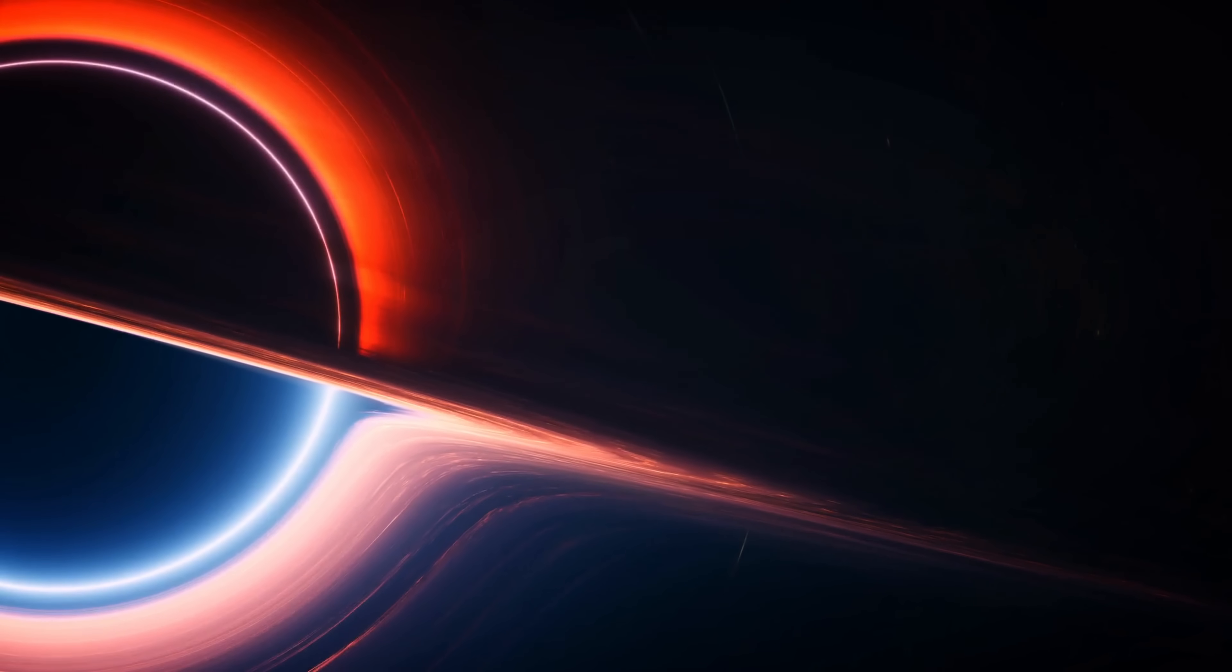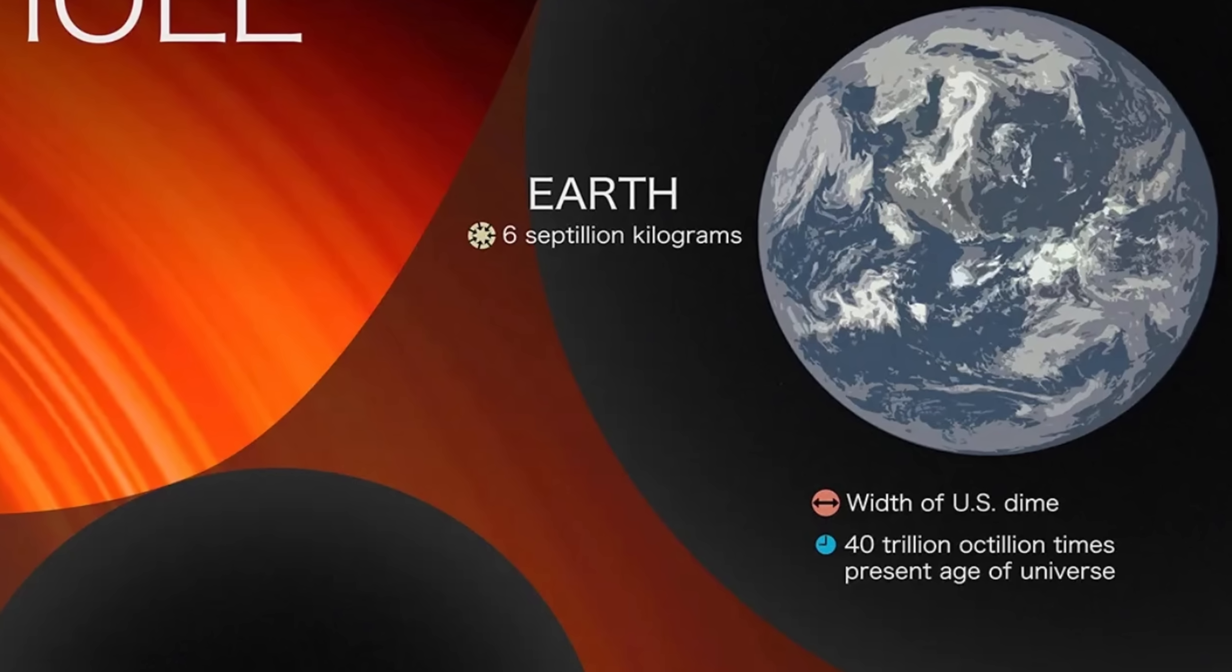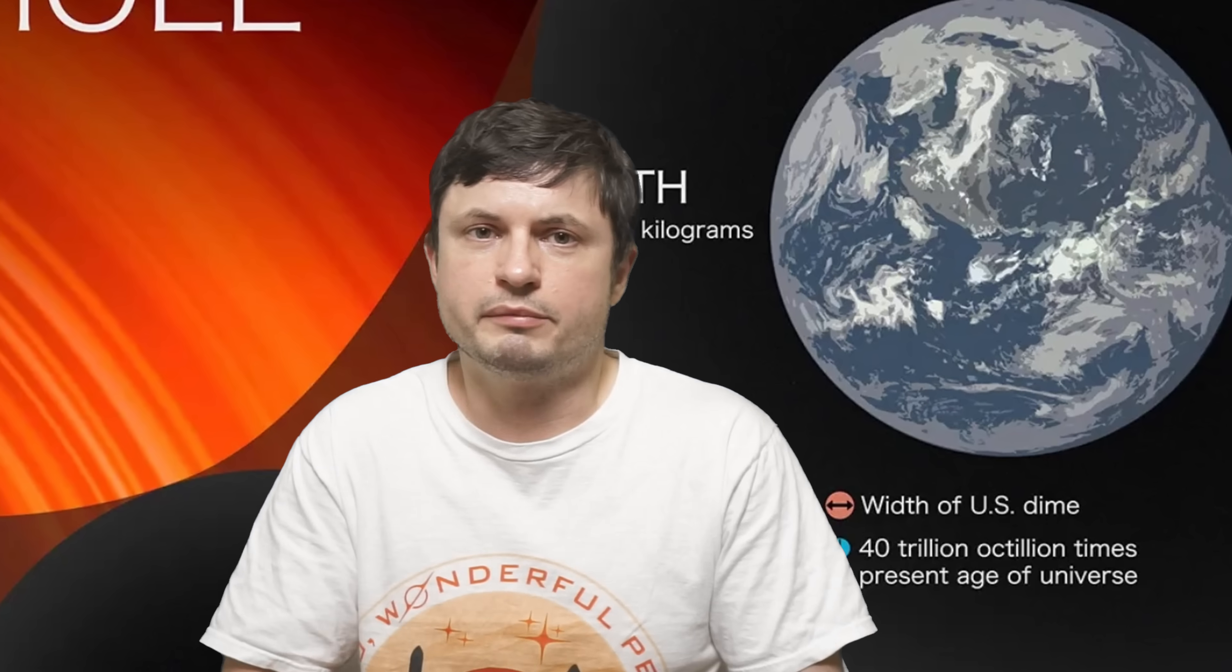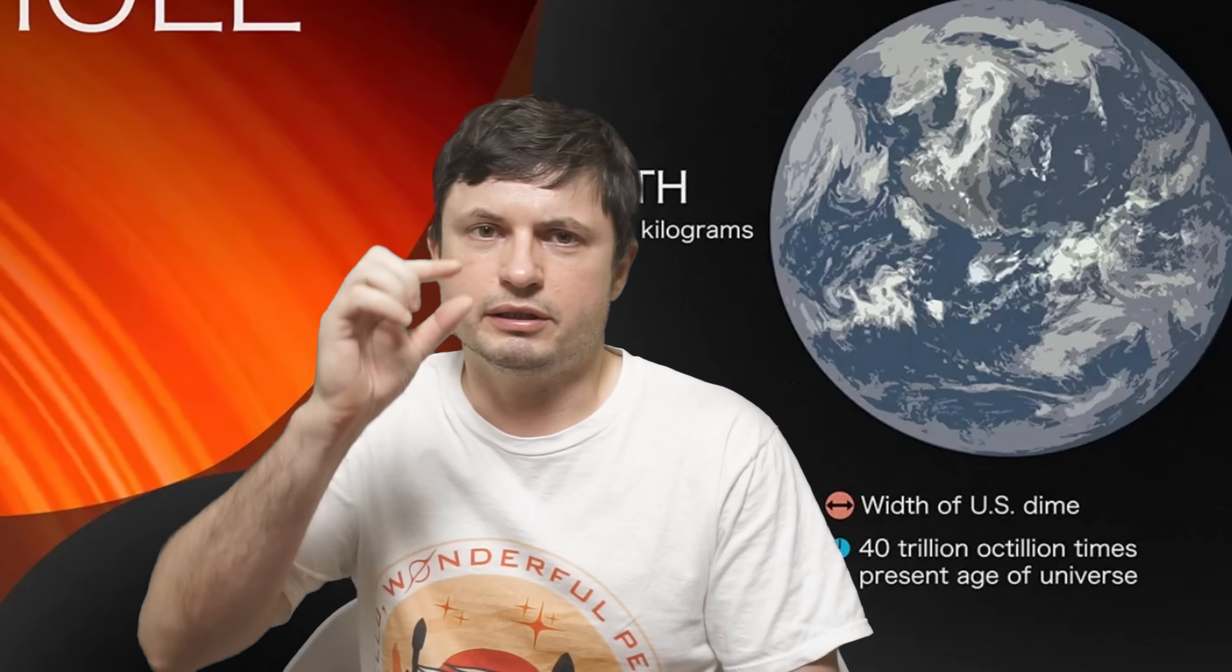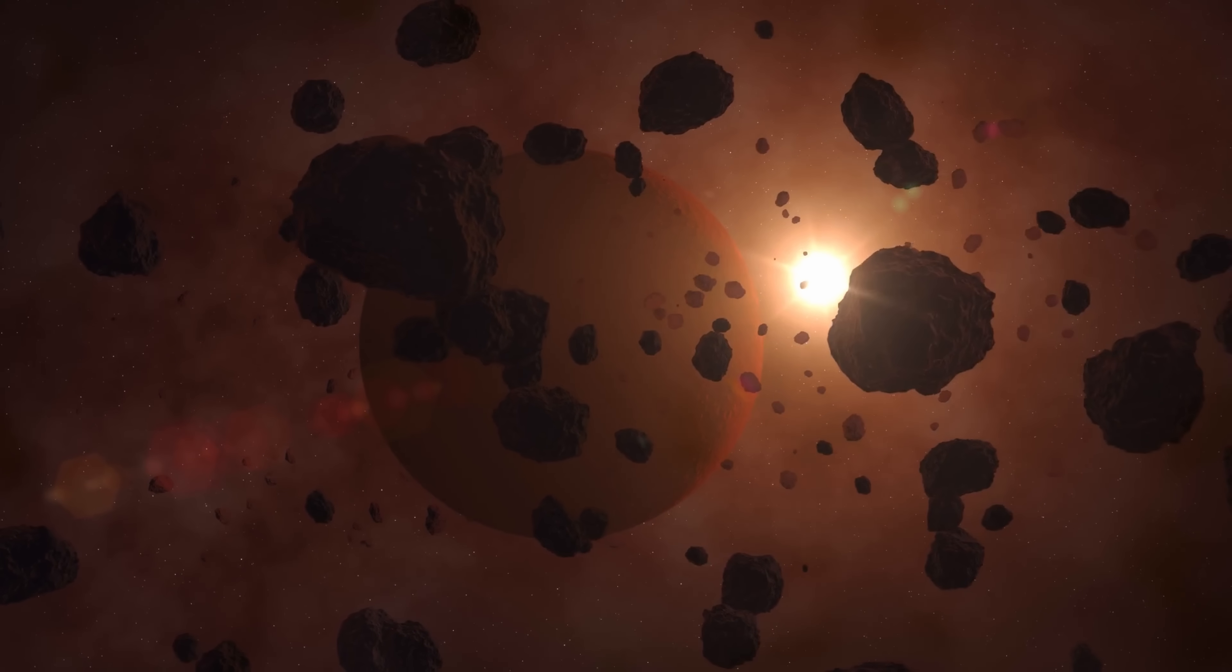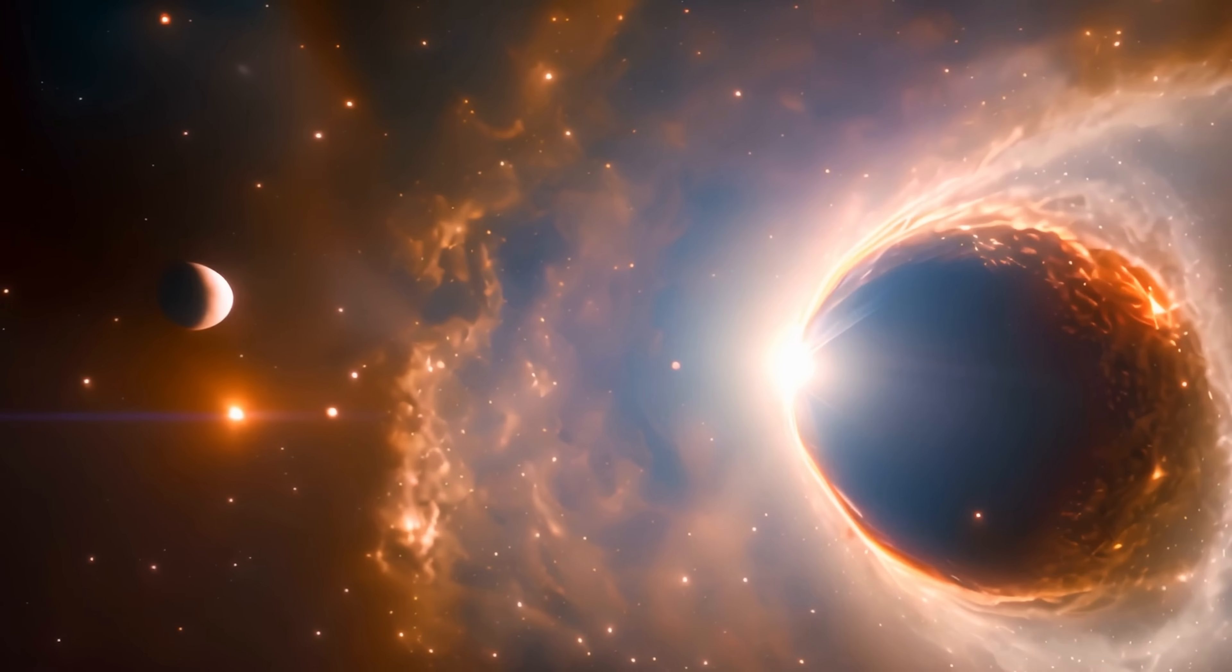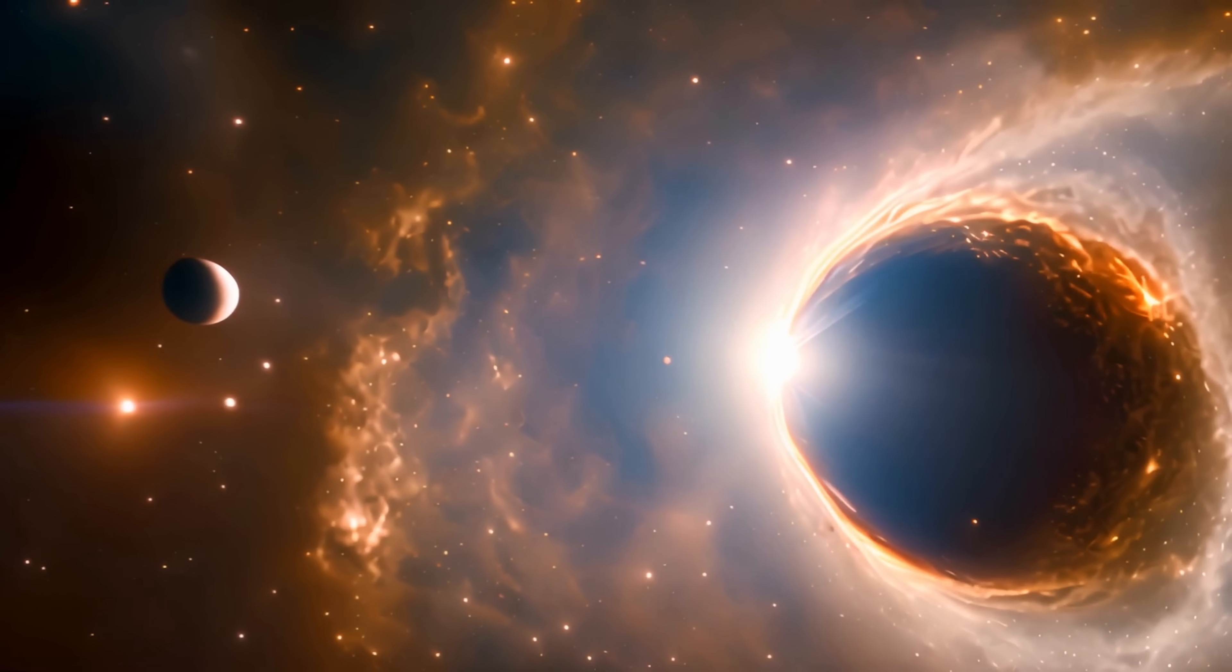And so if a black hole has a mass of planet Earth, it's actually going to survive for at least 40 trillion octillion times the current age of the universe. But in terms of physical size, it would only be this big. But once you actually reach smaller sizes and smaller masses, so essentially here we're talking about a really large asteroid, the lifetime of the black hole starts to approach the current age of the universe.